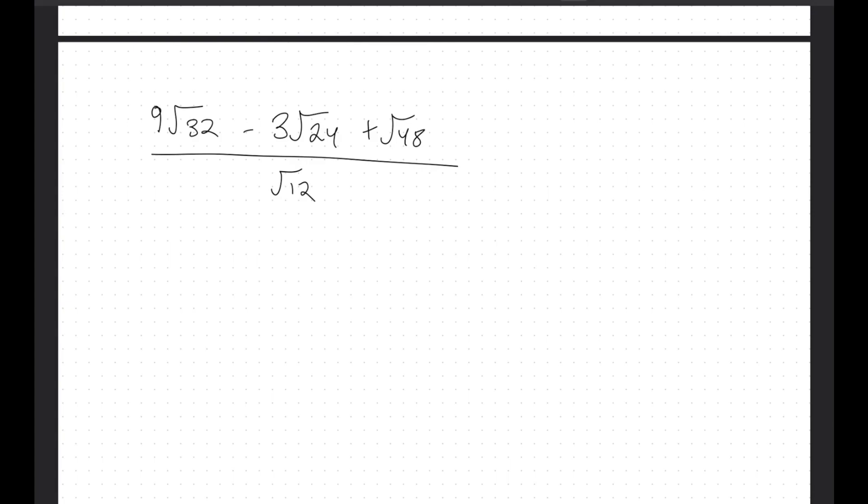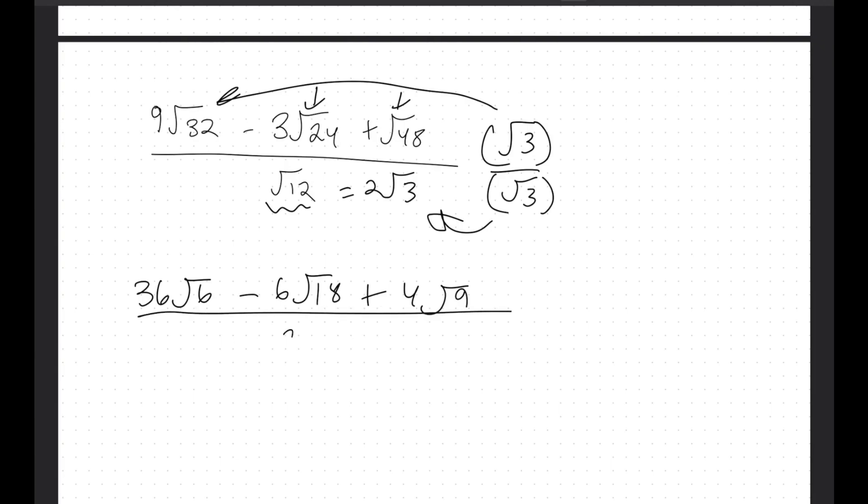And let's try one more. So in this one, I'll leave you a second to try it. Very similar. In this case, you would want to simplify the root 12 into 2 root 3, and then multiply everything by root 3, so root 3, root 3. And we will get, make sure you put it into all the terms. We will get 36 root 6 minus 6 root 18 plus 4 root 9, all over 2 root 9.